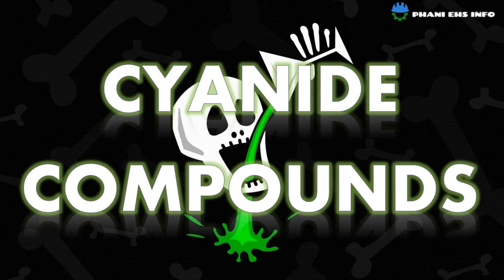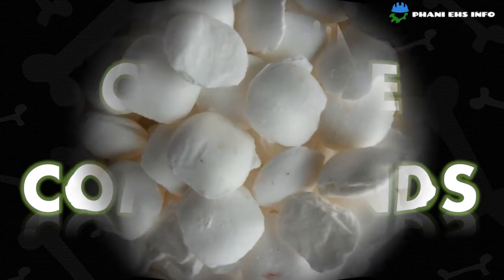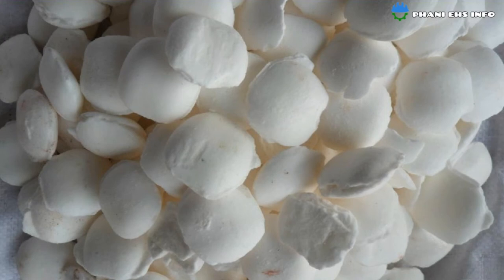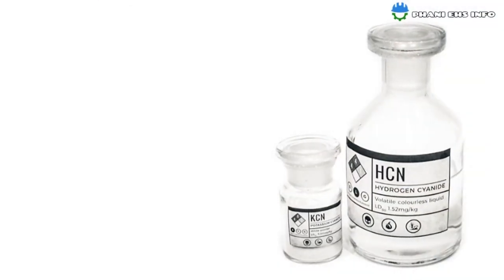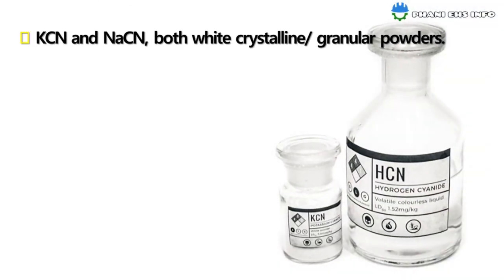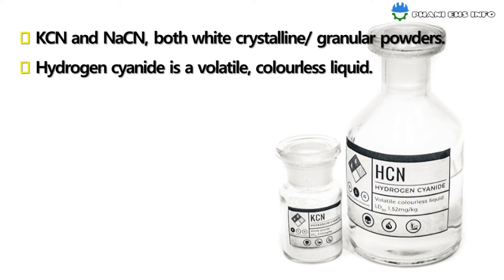Today we are going to be talking about cyanide compounds. The characteristics of cyanide compounds: potassium cyanide and sodium cyanide are both white crystalline and granular powders. Hydrogen cyanide is volatile and a colorless liquid.